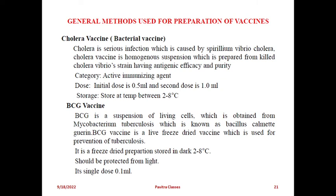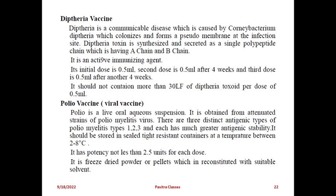The BCG vaccine is a suspension of living cells - not killed cells - obtained from Mycobacterium tuberculosis, known as Bacillus Calmette-Guérin. BCG vaccine is a live freeze-dried vaccine, making it an attenuated vaccine type. We are not killing the bacteria but using the living bacteria to obtain the antigen. This vaccine is used for prevention of tuberculosis. It is a freeze-dried preparation that should be kept in a dark room as it is light-sensitive, stored at 2 to 8 degrees Celsius. Single dose is 0.1 ml.